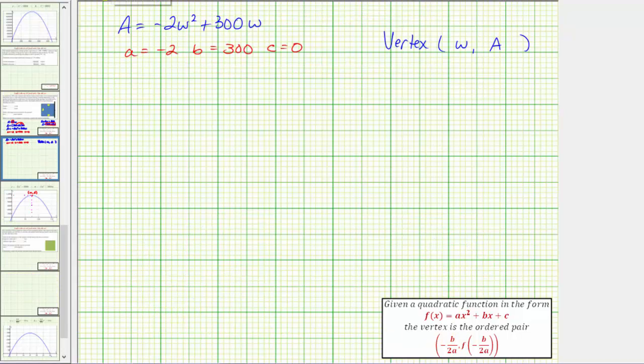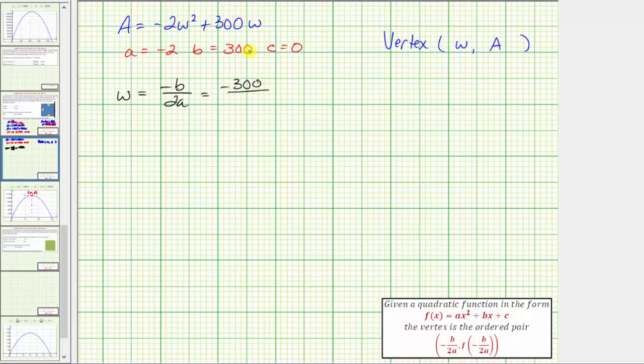So again, the x-coordinate, or in our case, the w-coordinate of the vertex is equal to negative b divided by 2a, which would be equal to negative 300, divided by 2 times negative 2, so we have negative 300 divided by negative 4, which equals positive 75. So the w-coordinate of the vertex is 75.